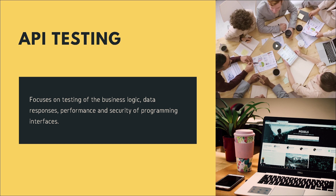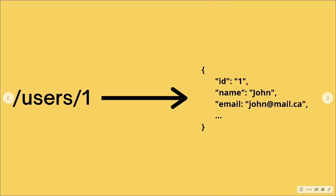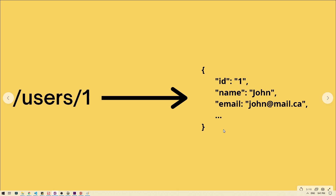With API testing you can either test a single request or integration between multiple requests, and then validate the response being returned by the server. For example, when testing the users API, you can validate that you're getting the right properties back — ID, name, email, etc. — and ensure the type of value returned is correct, such as email format or name character length. This way you can build multiple test cases to ensure your API is doing exactly what you expect.